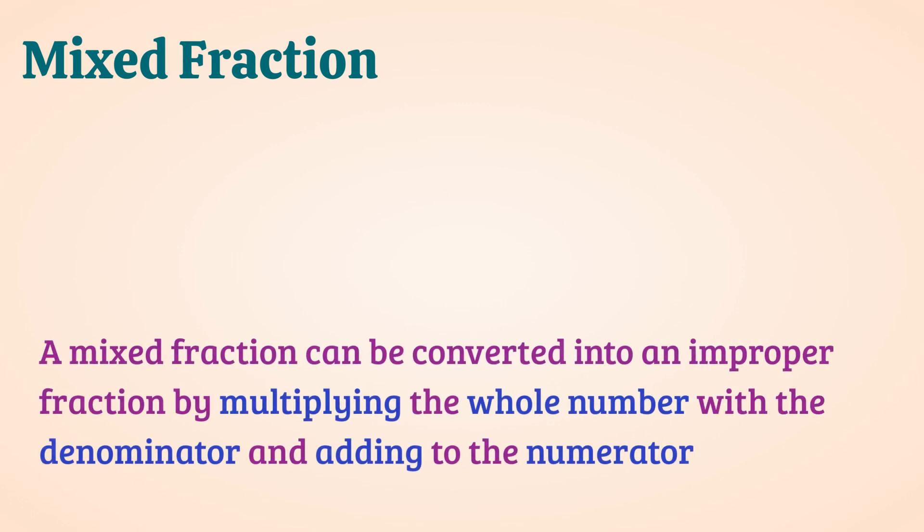A mixed fraction can be converted into an improper fraction by multiplying the whole number with the denominator and adding to the numerator. The improper fraction for 2, 1 by 3 will be 2 multiplied by 3 plus 1, which will give you 7 by 3.